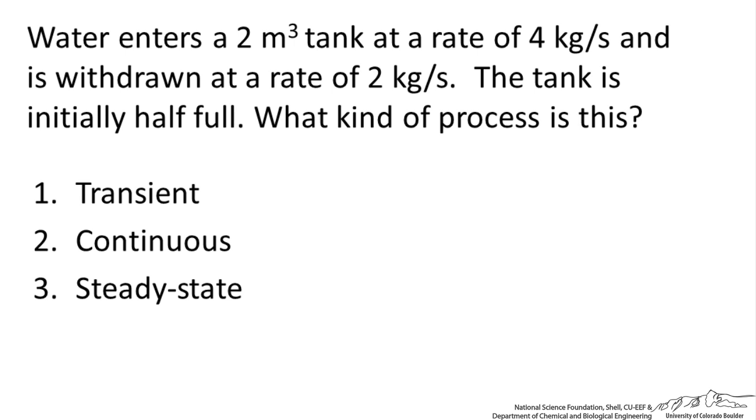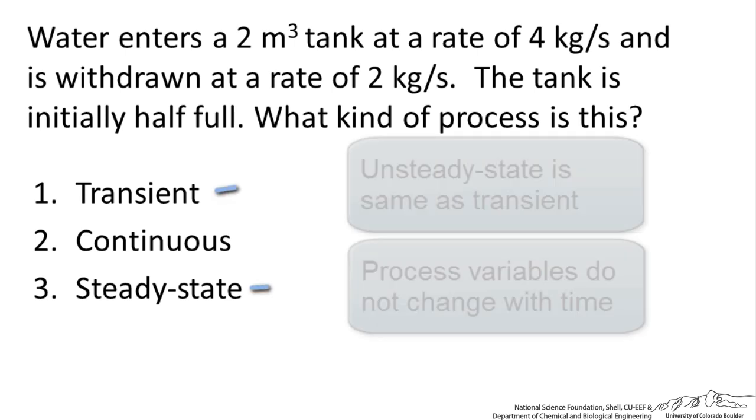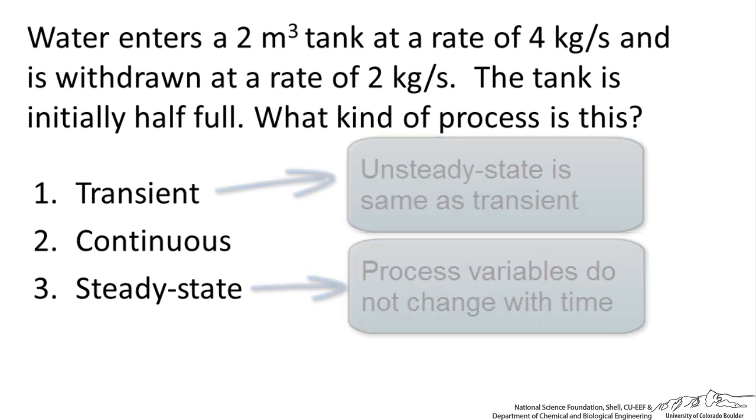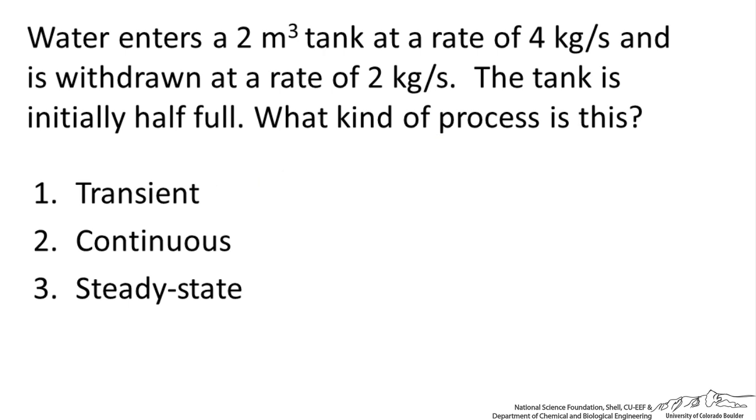And then the difference between transient and steady-state. Steady-state says that this is happening over time such that there are no major fluctuations in the process. Whatever is happening is happening on a long time scale, or at least a scale that is important. So in this process, because we have something happening that is eventually not going to be able to be maintained, it can't be steady-state.